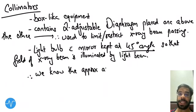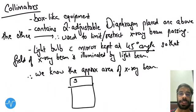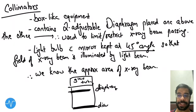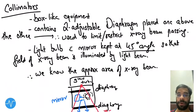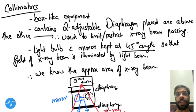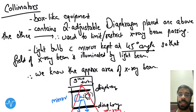By the light, we can determine the approximate area of the x-ray beam. In the diagram: the glass tube is shown with one diaphragm above the other, a light bulb, and a mirror. X-rays and light both emerge, so we can see the range of the x-ray beam because of the light beam.